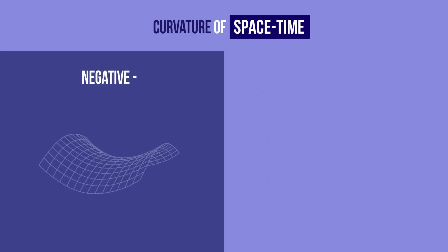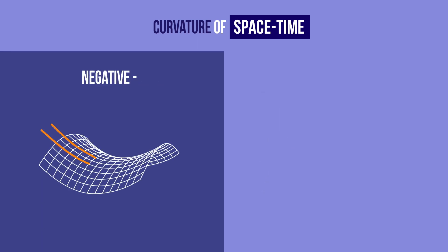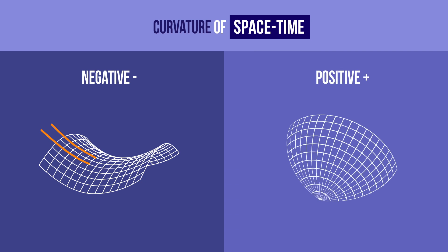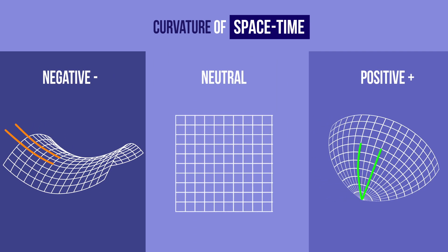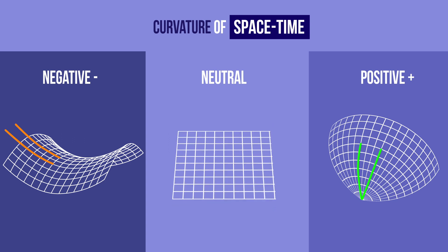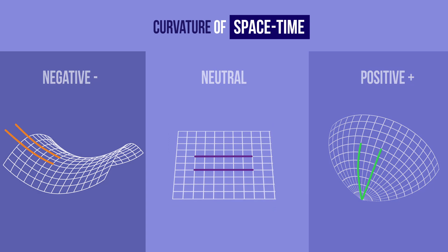A negative curvature of space-time means that parallel lines diverge, while a positive curvature means that parallel lines converge. A neutral curvature means that space-time is flat and that parallel lines will stay parallel.